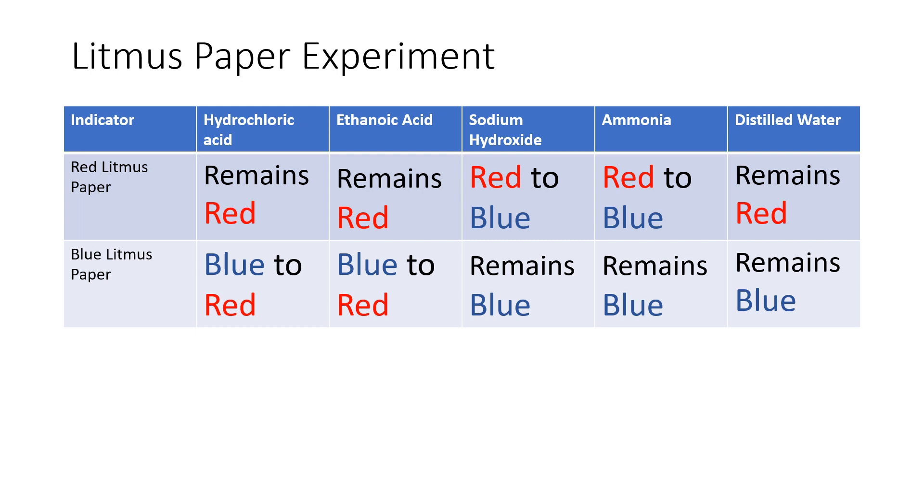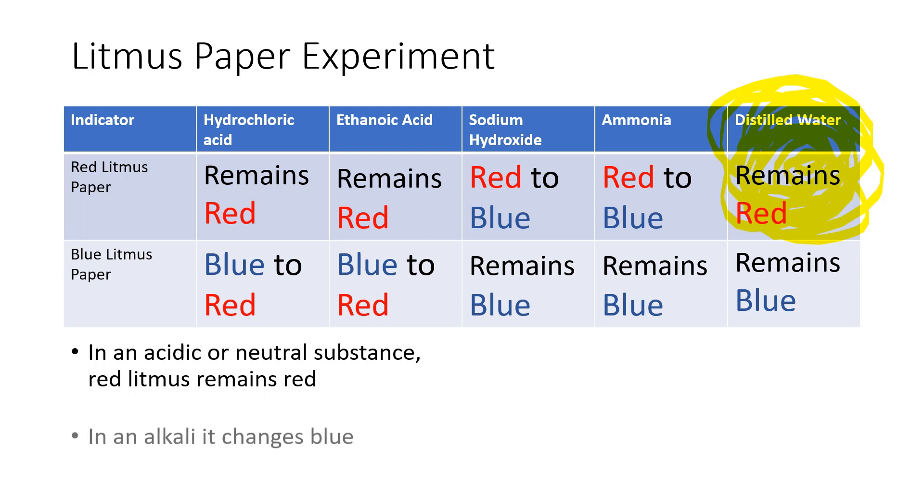Because, yes, it could be an acid, like hydrochloric acid or ethanoic acid, but look at that last column. It could also be distilled water. That's really lovely highlighting, isn't it? And the same is true for blue litmus paper as well.